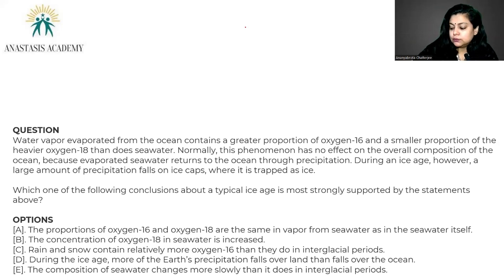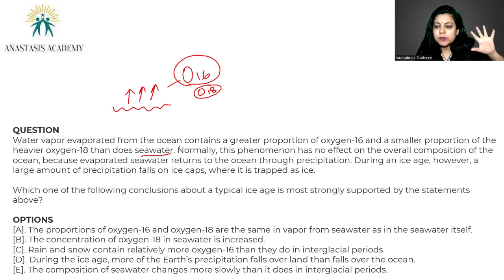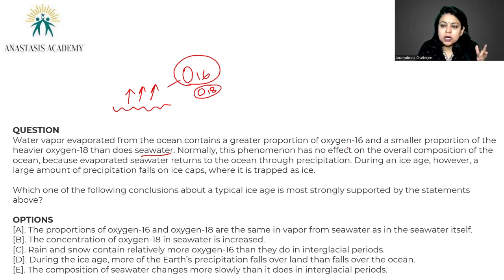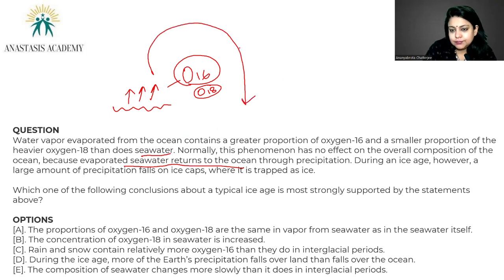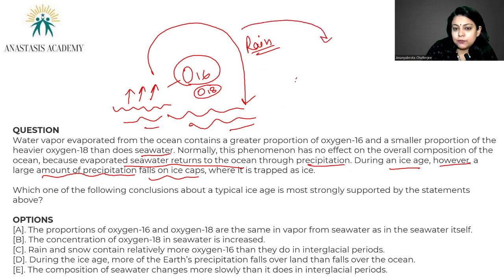Last question: water vapor evaporated from the ocean contains a greater proportion of oxygen-16 and a smaller proportion of heavier oxygen-18 than does sea water. The proportion of O-18 in sea water is usually pretty high. Normally, this phenomenon has no effect on the overall composition of the ocean because evaporated sea water returns to the ocean — it is replenished through precipitation. However, during an ice age, a large amount of precipitation falls on ice caps. If the rain doesn't fall into the water, it falls on the ice caps instead.